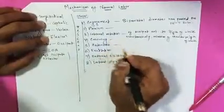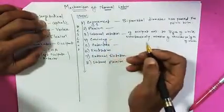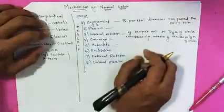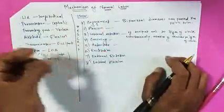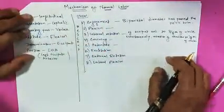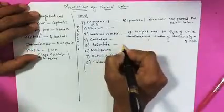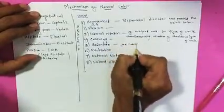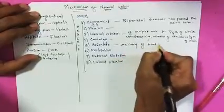And then comes extension. In extension, what happens? There is delivery of the head — at first comes the vertex, then comes the brow, and then the face. Extension is delivery of the head by extension.